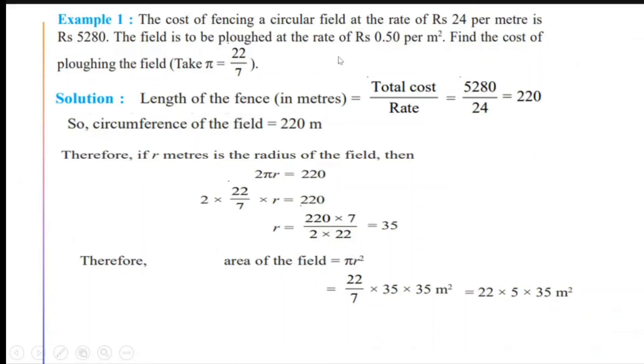Now, 1 meter square costs me Rs 0.50 for plowing. So if 1 meter square is costing Rs 0.50, then the cost of plowing this complete area will be equal to this area, 22 into 5 into 35 multiplied by 0.50.